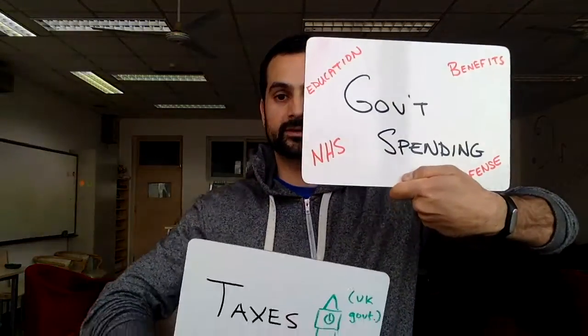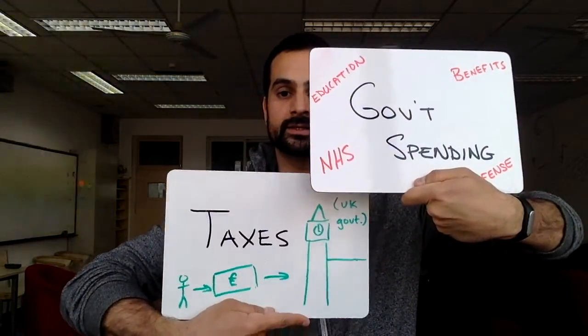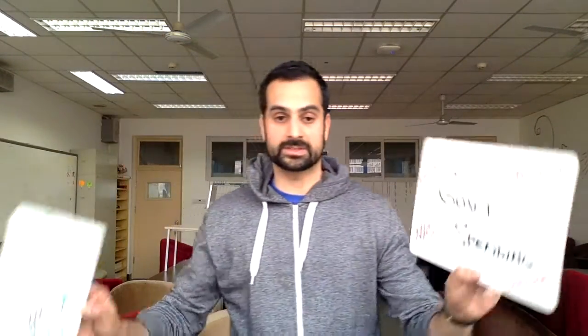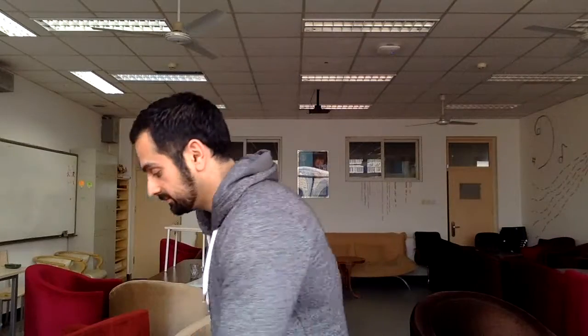The third situation is when government spending exceeds what the government has collected in tax. That is called a budget deficit. Once you understand what's happening with these and on what side it falls, you can explain whether it's a budget surplus, budget deficit, or if it's balanced.